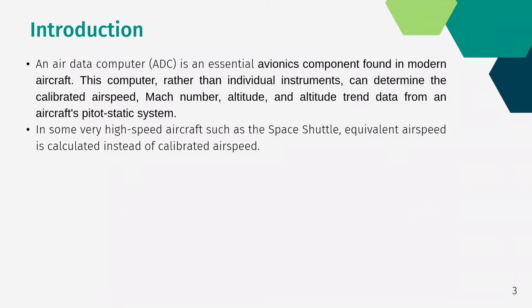An Air Data Computer is an essential avionics component found in modern aircraft. This computer, rather than individual instruments, can determine the calibrated air speed, Mach number, altitude, and altitude trend data from an aircraft pitot-static system. In some very high speed aircraft such as the Space Shuttle, equivalent air speed is calculated instead of calibrated air speed.